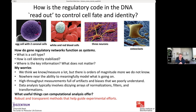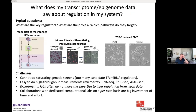Given these challenges, what useful thing can we still do? I think the best thing we can do with computational analysis today is to develop methods that are robust, transparent, and as simple as possible — to extract useful information from the data and make useful hypotheses that guide experimental efforts. We shouldn't expect to fully understand how the whole system functions; the best we can do is extract hypotheses to help focus where to do the next experiments.